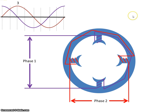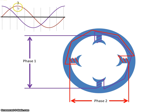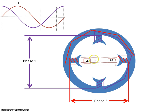At point three, there is no current in phase one — it is at zero — so there is no current going through those windings. The current through phase two is at its maximum, so we will have a magnetic field in that direction.